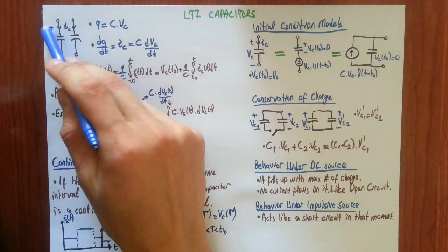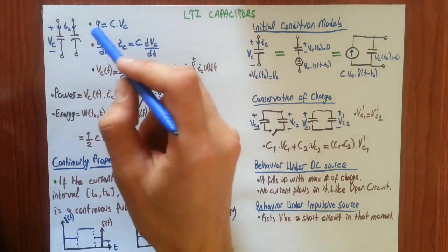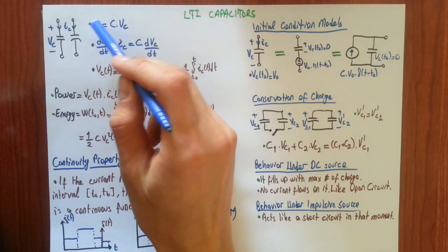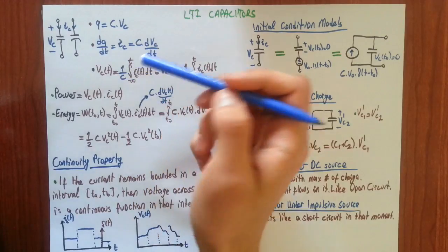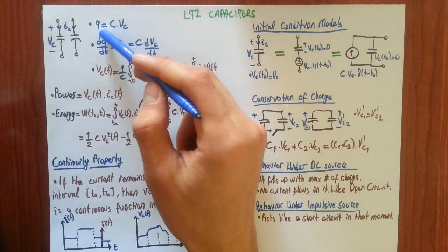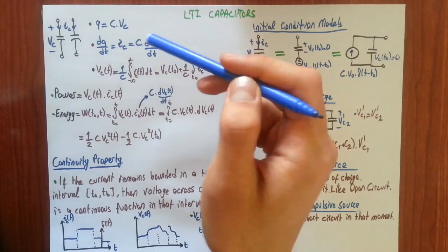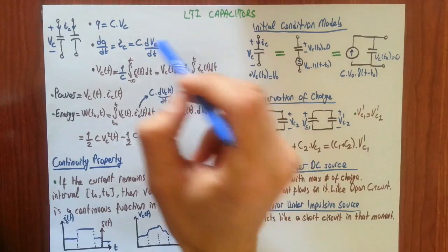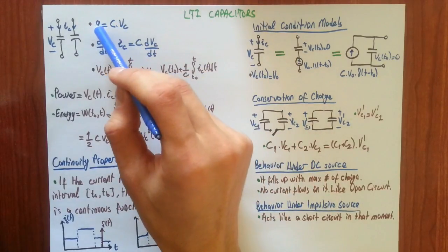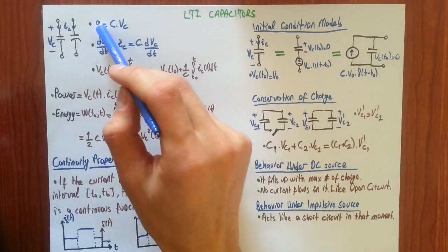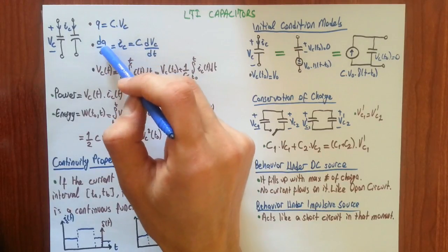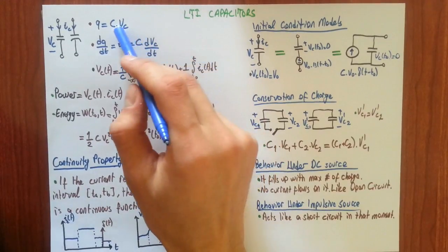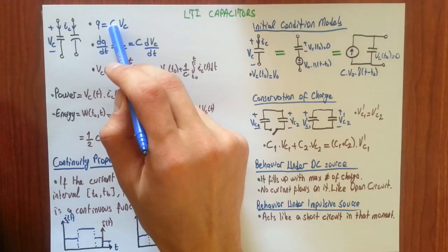The basic equation that defines capacitors is Q equals capacitance times voltage across it. We know that the time derivative of charge is current. And to relate current through capacitor to voltage across capacitor, we can take the derivative of both sides. Left hand side we have DQ over DT, which is also equal to current through capacitor.